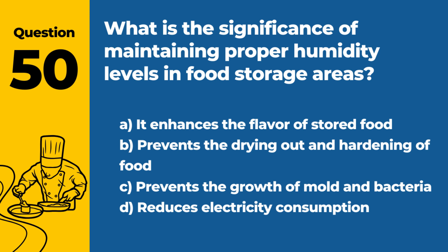Question 50: What is the significance of maintaining proper humidity levels in food storage areas? a. It enhances the flavor of stored food. b. Prevents the drying out and hardening of food. c. Prevents the growth of mold and bacteria. d. Reduces electricity consumption. Answer: c. Maintaining proper humidity levels in food storage areas is crucial to prevent the growth of mold and bacteria, which can spoil food and pose health risks.